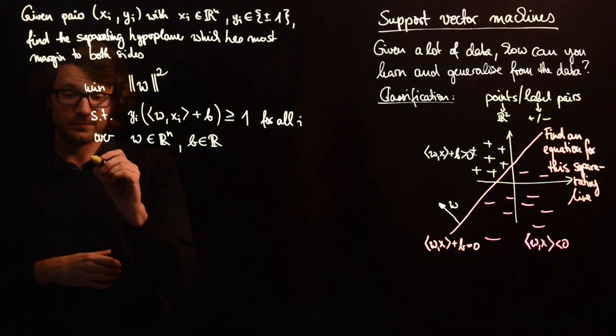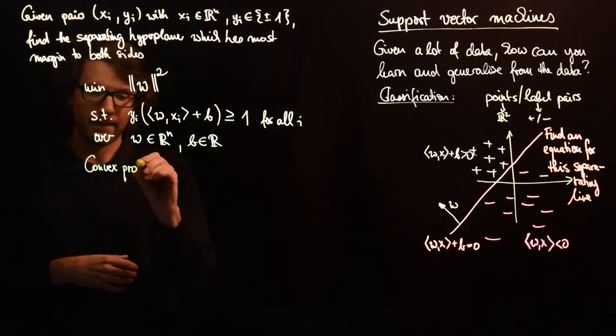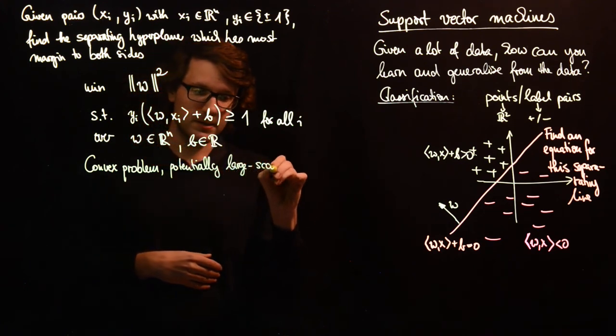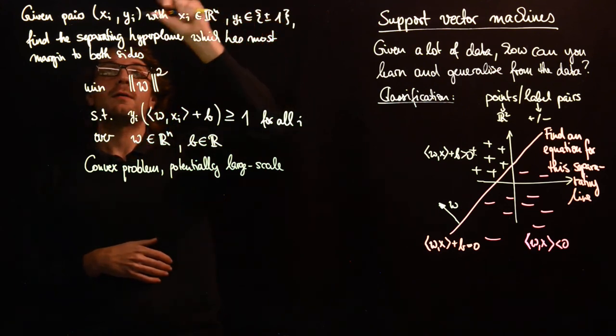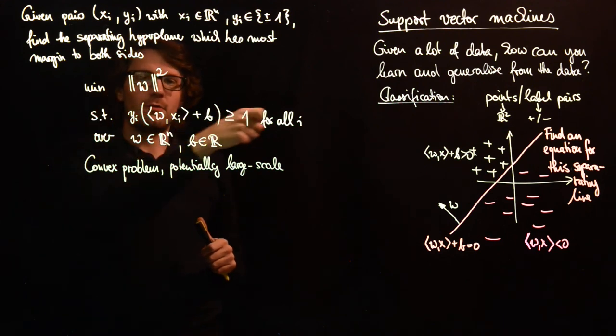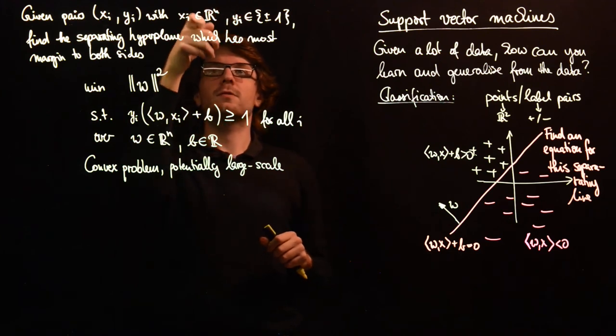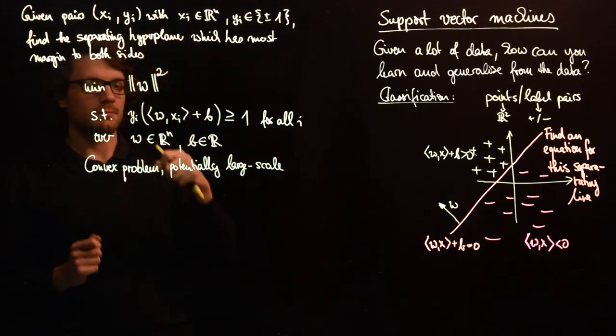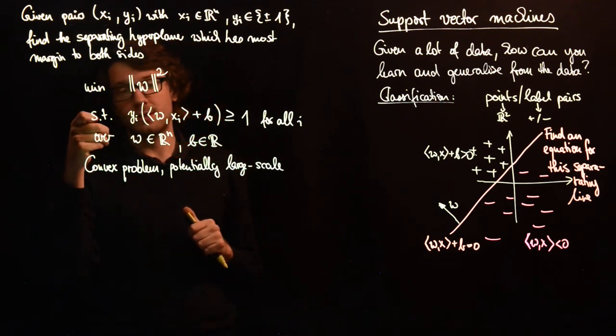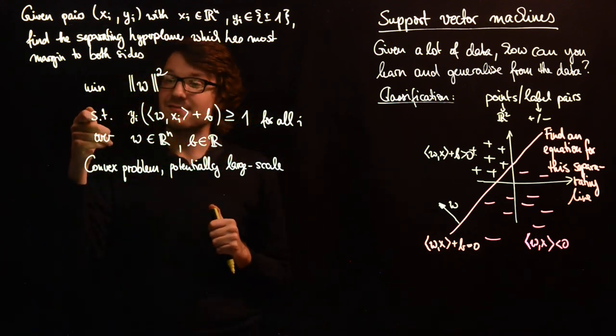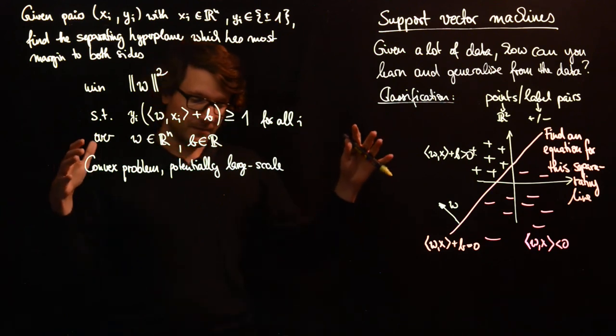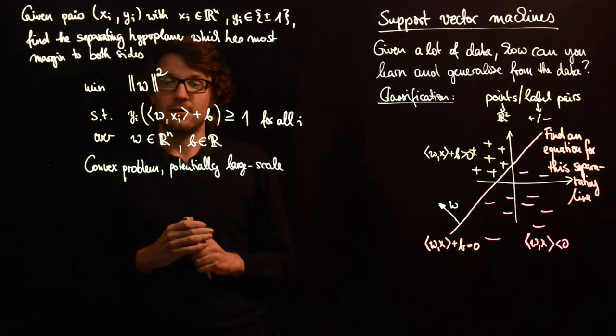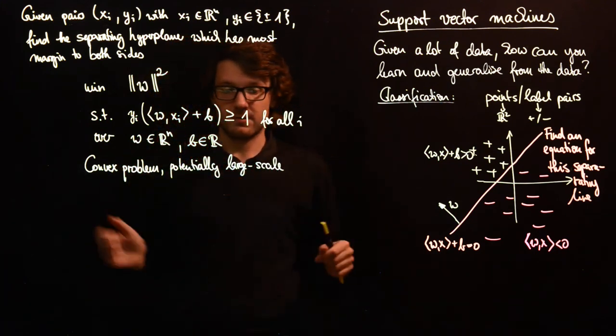The first thing is this is a convex problem. And it's potentially large scale. Potentially large scale means if you have a large amount of data here then you have a lot of constraints here. And if your space of samples is large enough then you also get to have a large number of variables. So w might be large. So you have a large number of constraints. This is often the determining factor for the problem being large scale.